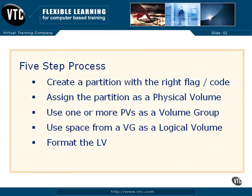First, you use a tool like FDisk or Parted to create a partition, and then you set it with the right flag or code for logical volumes. Next, you assign the partition as a physical volume with a command like pvcreate, and then you use one or more physical volumes grouped together as a volume group. That gives you a bunch of available space from which you can set up one or more logical volumes, which can then be formatted.